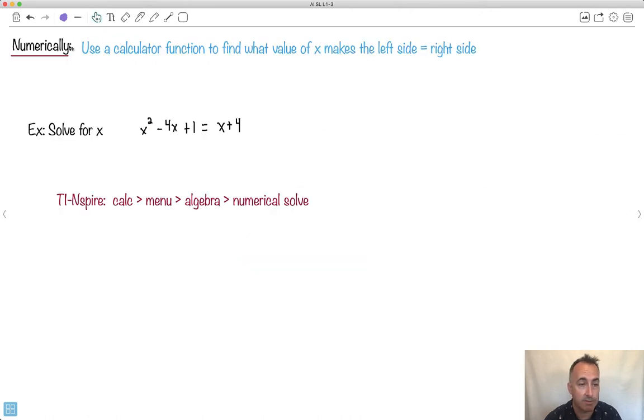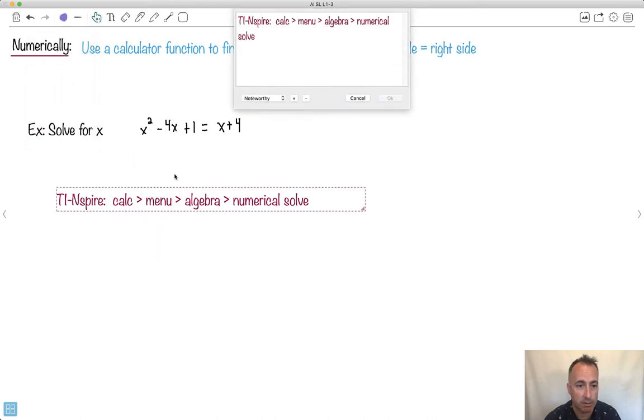All right. So let's first of all solve something numerically. So we're going to use our calculator function. It depends which calculator you use. I'm going to show you how to do it with the TI-inspire, but the other calculators have other ways of also numerically solving things. For example, on the TI-84, you can go to apps. I think it's called polysmult2. Actually, maybe I should even write that.